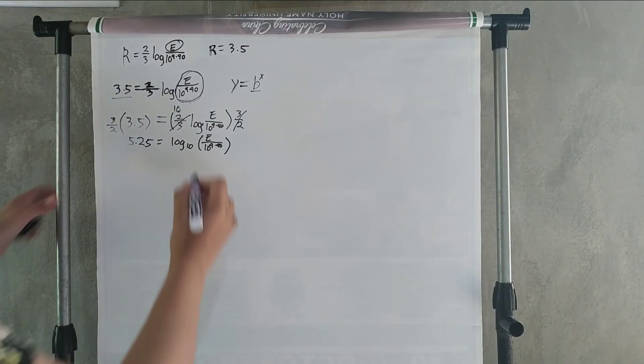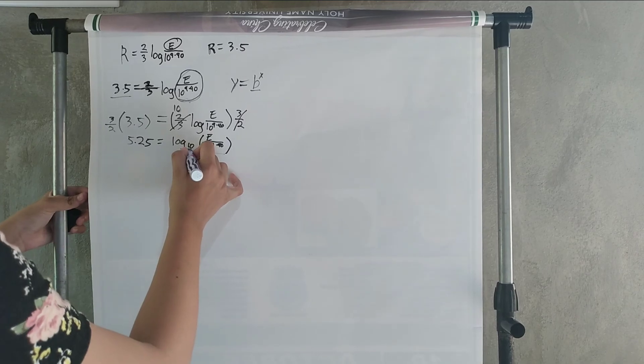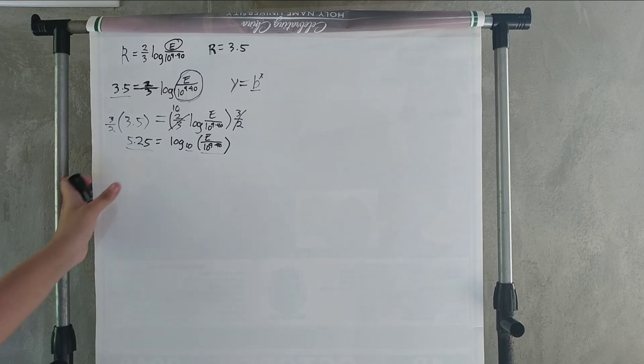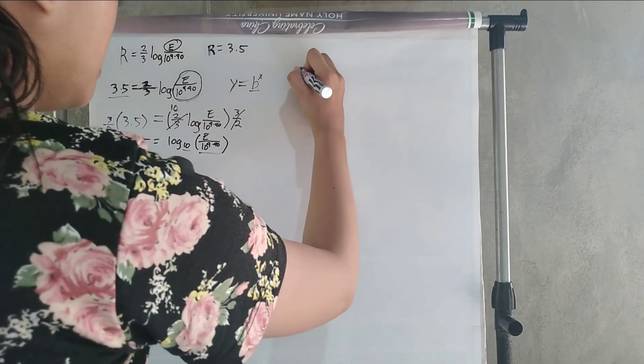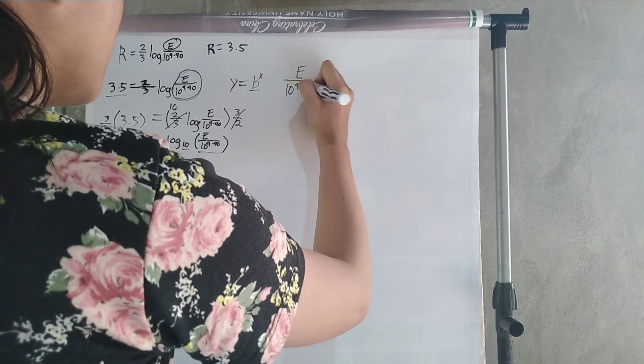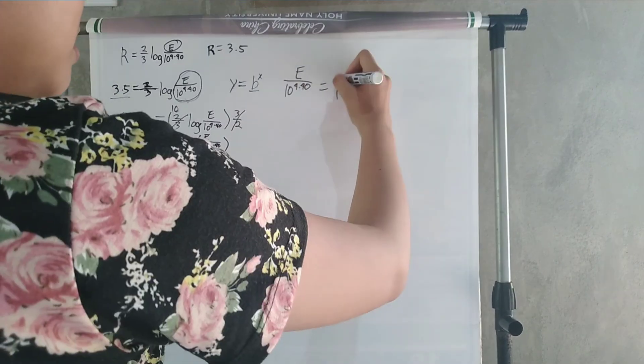Since we have now our y, our base, and our x, we can now transform the equation into an exponential function. Which is going to be E over 10 to the power of 4.40 equals 10 to the power of 5.25.